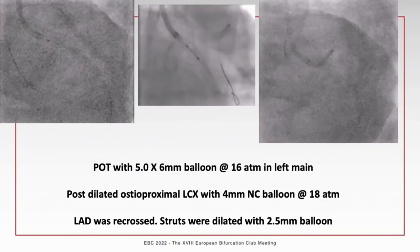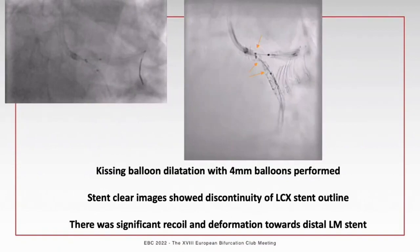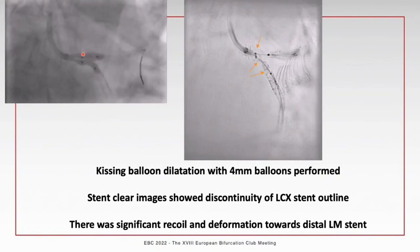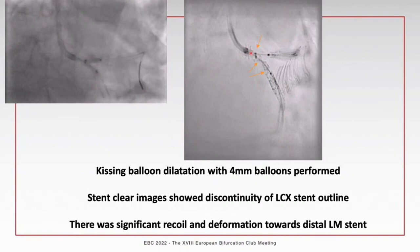A POT was performed at the left main with a 5mm balloon at 16 atmospheres, followed by post-dilation at the ostio-proximal circumflex with a 4mm non-compliant balloon at 18 atmospheres. The LAD was recrossed, struts were pre-dilated with a 2.5mm balloon, and kissing balloon dilatation was performed with 4mm balloons. During kissing balloon dilatation, the circumflex balloon was not expanding properly. Once balloons were deflated, there was a significant break in the stent outline with transaction and discontinuity - and towards the left main the stent appeared crowded and collapsed, suggestive of deformation.